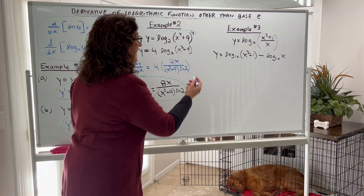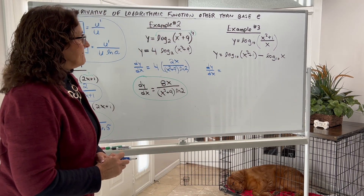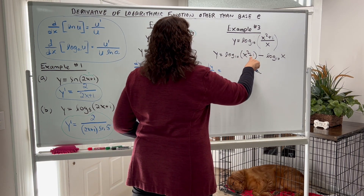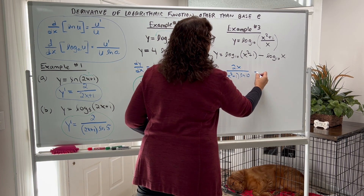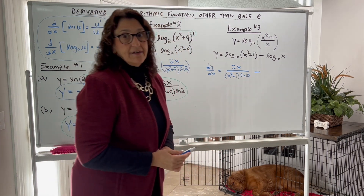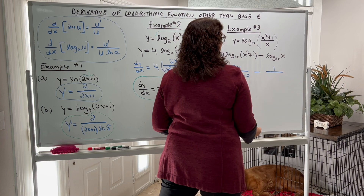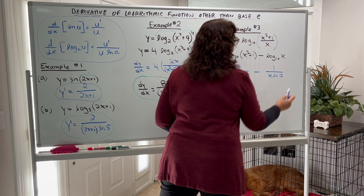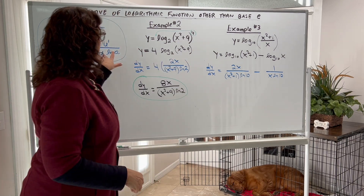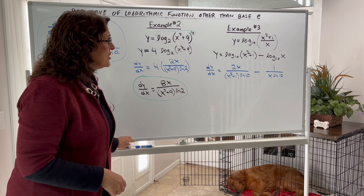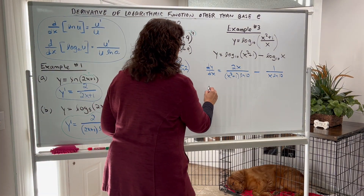Now let's find our derivative. We have two log terms, so we find the derivative of each. For the first logarithm, the u quantity is x squared plus 1. Derivative of that is 2x, put it over x squared plus 1, times natural log of the base — that's natural log 10. Then for the second term, derivative of x is 1, over x times natural log 10. So it's u prime over u times natural log of the base for each term.